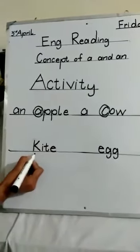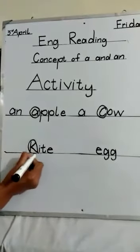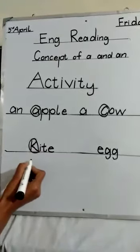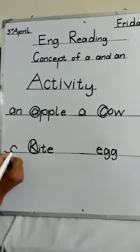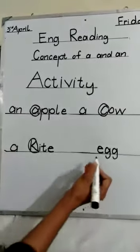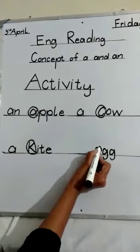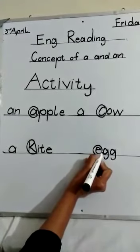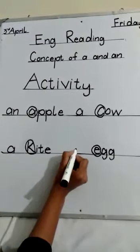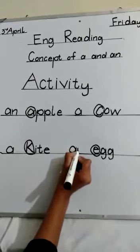What is this? K. K is a consonant. What is used with a consonant? A. What is this? E. E is a vowel. What is used with a vowel? A, N — N. Do this type of activity at home as well.